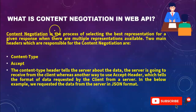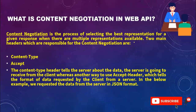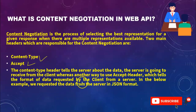Next important question — 100% likely to be asked — is: what is content negotiation in Web API? Content negotiation is the process of selecting the best representation for a given response when there are multiple representations available. The two main headers responsible for content negotiation are Content-Type and Accept. The Content-Type header tells the server about the data it is going to receive from the client, whereas the Accept header tells the server the format of data requested by the client.